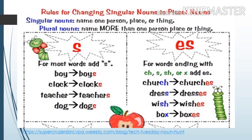The rules for changing singular nouns to plural nouns. For most words, add S. For example: boy → boys, clock → clocks, teacher → teachers, dog → dogs. For words ending with CH, S, SH, or X, add ES. For example: church → churches, dress → dresses, wish → wishes, box → boxes.